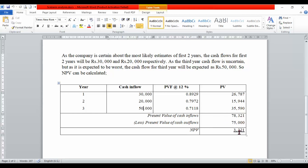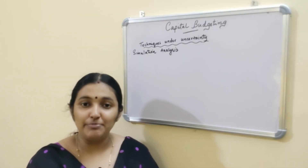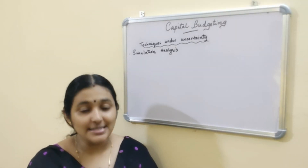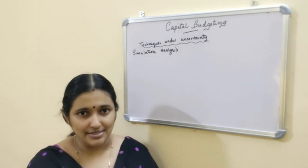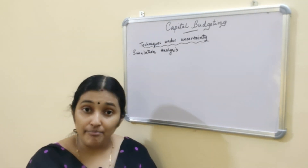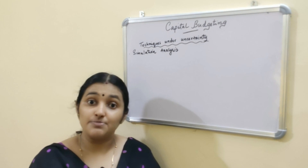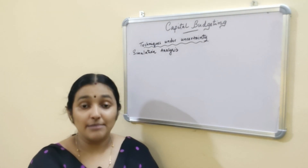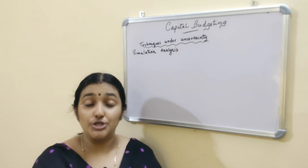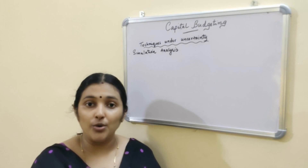The next capital budgeting technique under uncertainty is Simulation Analysis. It is an improvement to Scenario Analysis. In scenario analysis, the combined effect of changes in variables is considered, but in simulation analysis the interactions between variables are considered. One of the most famous simulation techniques is Monte Carlo simulation — a statistical approach that uses random numbers and probabilities already assigned to simulate the outcome of the project.